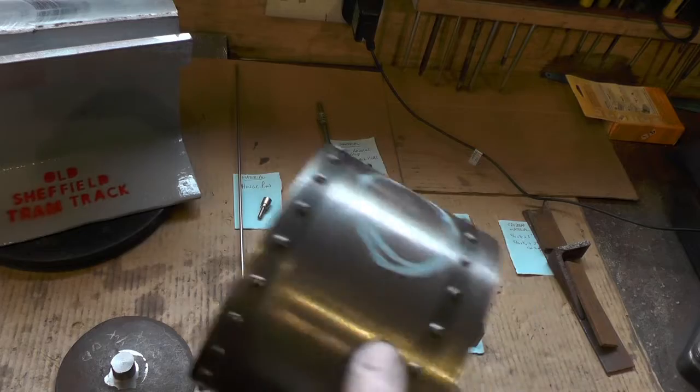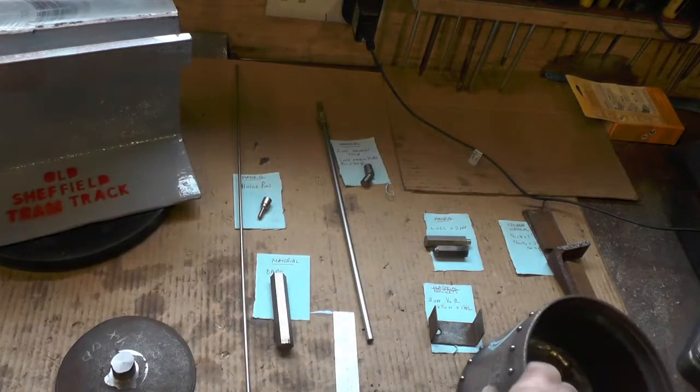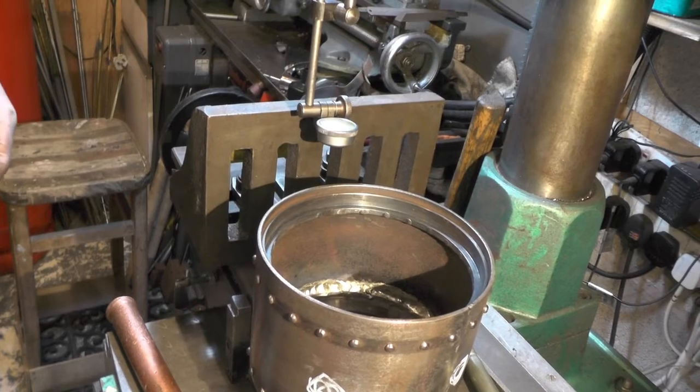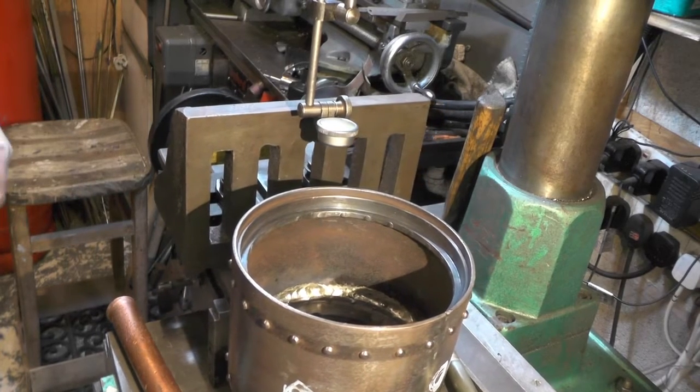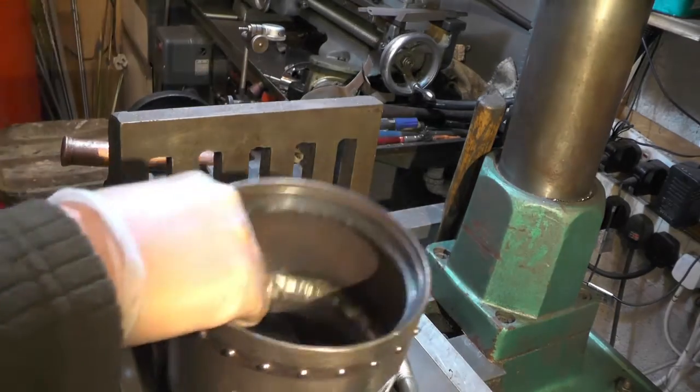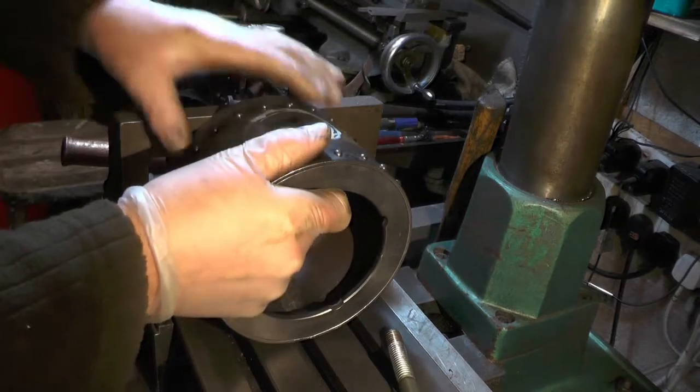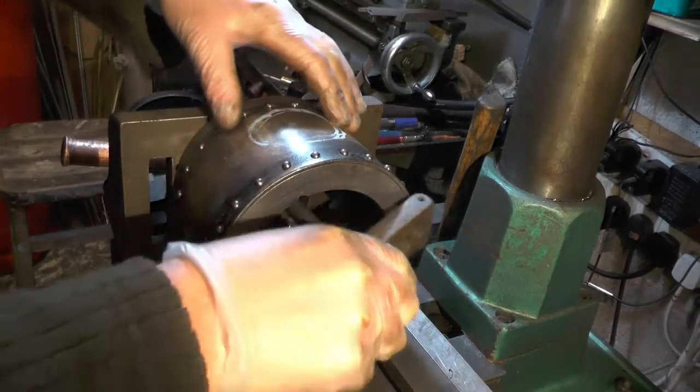But before I do them, I'm going to put this on my milling machine and drill these holes. So I'm just clocking the angle plate up on the milling machine to get that square, and then I'm going to clamp this smokebox to the angle plate.